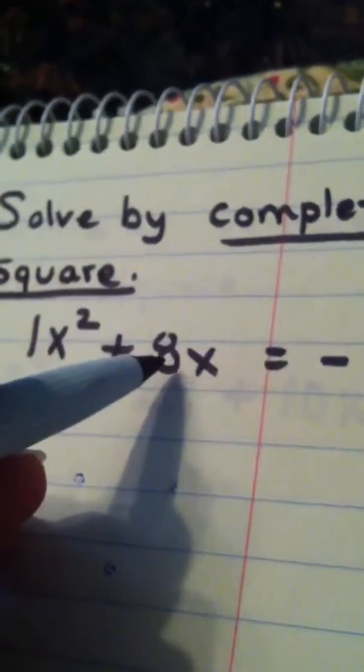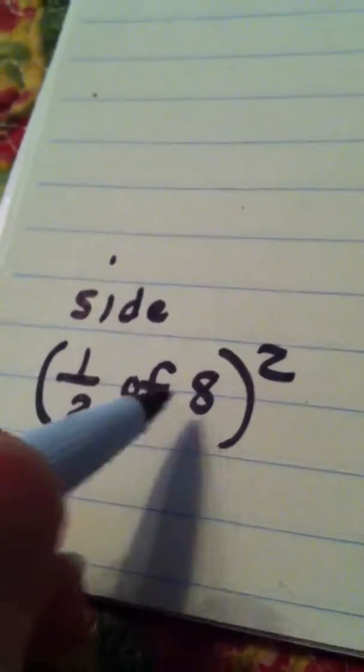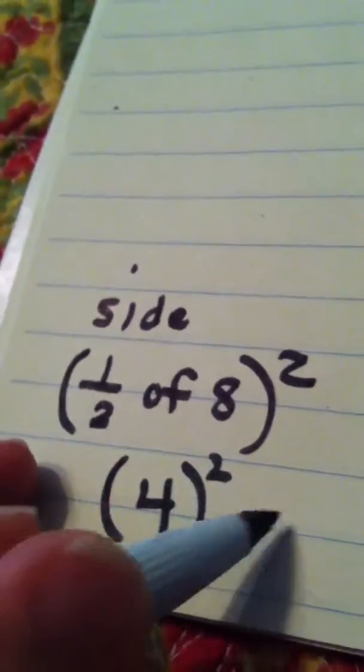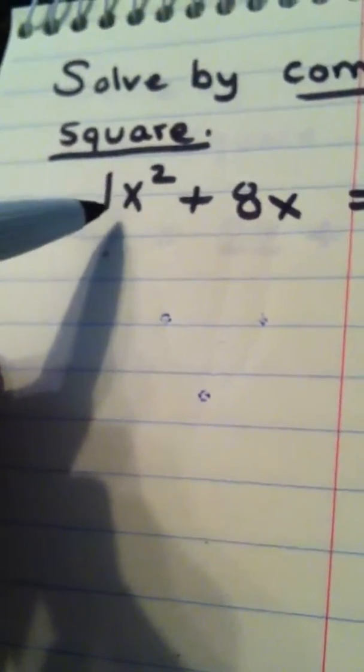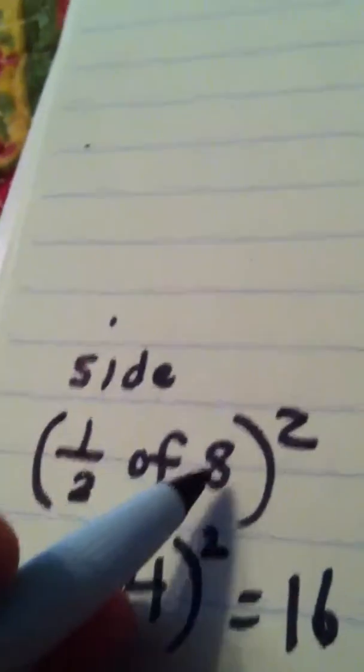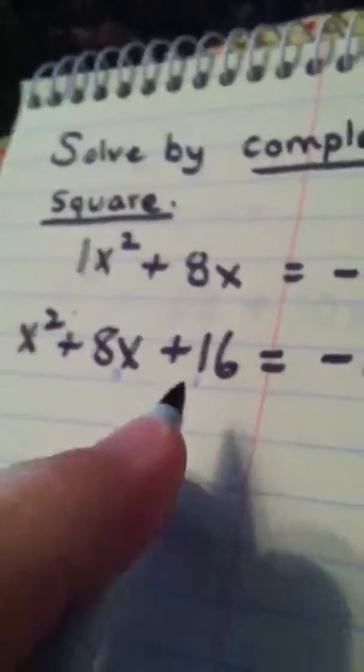Now, what you do next is you look at the term in front of the x — you look at the value of b, the middle coefficient. Let's go off to the side: we take half of 8 and we square it. Half of 8 is 4, and 4 squared is 16. Once the x's were alone and the 1 was in front, we looked at 8, took half of 8, which is 4, and 4 squared is 16. We now take that 16 and add it to both sides of the equation. What we do to one side, we do to the other.